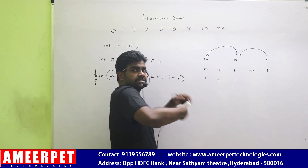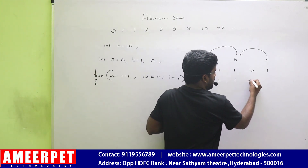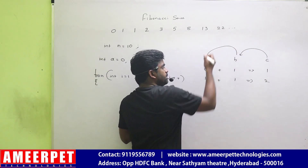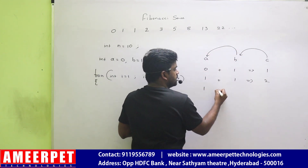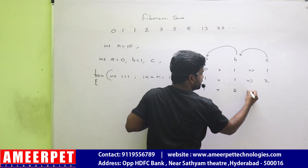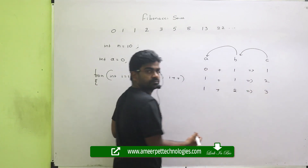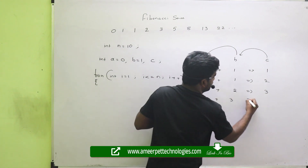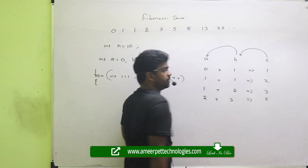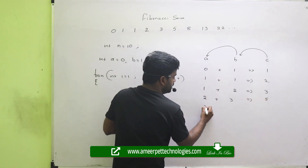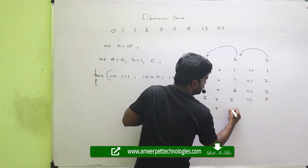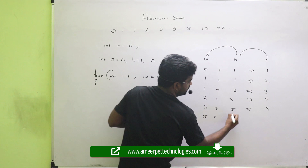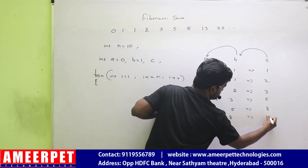Again do the same operation: 1 plus 1, value is 2. Store that b value into a, c value into b. So the value is 3. Store that 2 here and next 3 here — value is 5. Store that 3 here and 5 here — so value is 8. Store that 5 here, 8 here — value is 13.